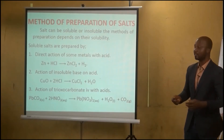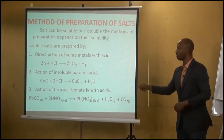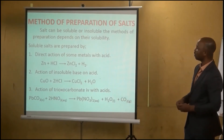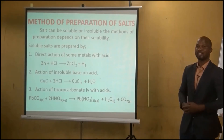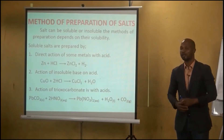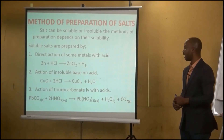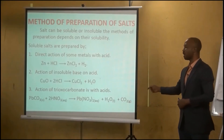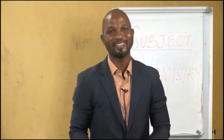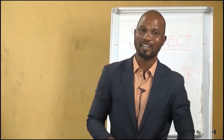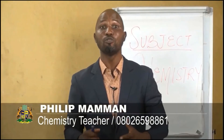The next method is the action of trioxocarbonate(IV) salts with acid. When a carbonate reacts with acid, carbon(IV) oxide is always liberated. For example, lead(II) trioxocarbonate(IV) plus trioxonitrate(V) acid (HNO₃) gives lead(II) nitrate plus water plus carbon(IV) oxide. Carbon(IV) oxide turns lime water milky and is an acid anhydride that dissolves in water to give a weak carbonic acid.